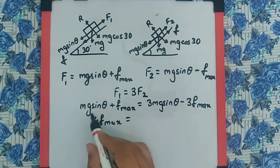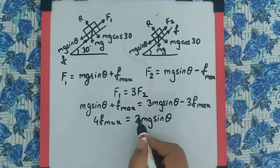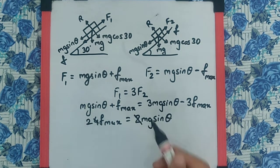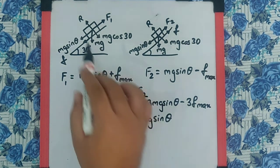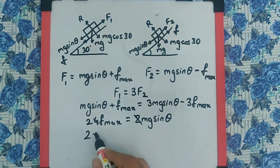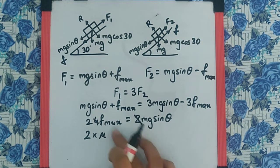Which definitely cancels this 2 over here. Now Fₘₐₓ is, we know, μN or μR, where R in both the cases is mg cos θ. So that is μ times R, where R is mg cos θ.